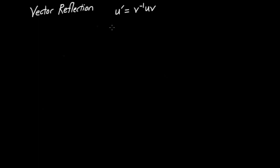For those who've watched my quaternion videos, you'll notice that the formulas for 3D rotation and reflection in quaternions are quite similar to this — you take an object and multiply it on the left and right by two different things. There's a very good reason for this similarity, and that's an idea we'll explore further as we discuss geometric algebra.